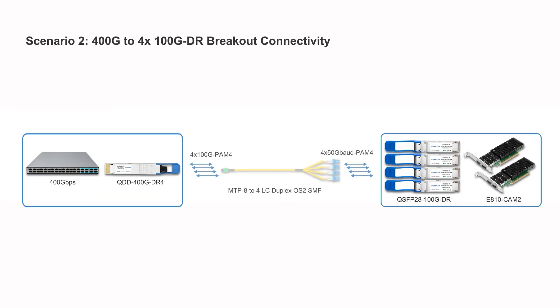This module can also be used for 100GbE network cards. By using an MTP8 to four LC OS2 patch cable to connect the QDD 400G DR4 module to four QSFP28 100G DR modules, the network card can be connected to the Ethernet switch.